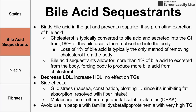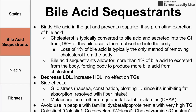You want to avoid using bile acid sequestrants in people who have dysbetalipoproteinemia with a very high triglyceride count. At the bottom, there are three individual bile acid sequestrants listed. They all start with 'Chole' or 'Cole' (C-H-O-L-E or C-O-L-E), so they're pretty easy to remember.